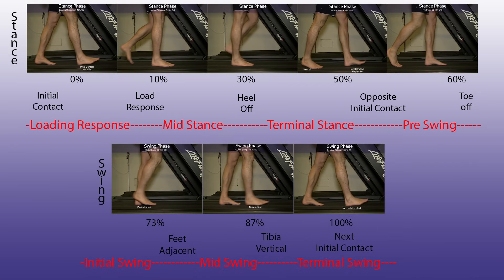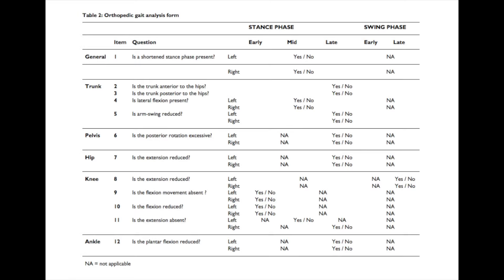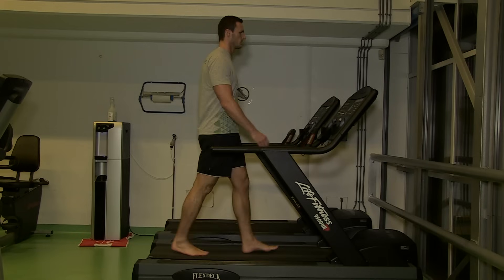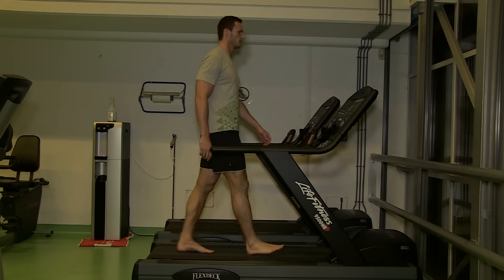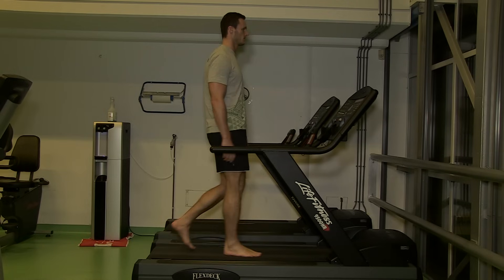Take a look at this overview. You can download a full resolution picture in the description down below. To analyze gait in physiotherapy, one could make use of the Nijmegen orthopedic gait analysis form — you can find the article in the description. It's a checklist to assess certain aspects of the body during gait, and it's important to compare left and right.